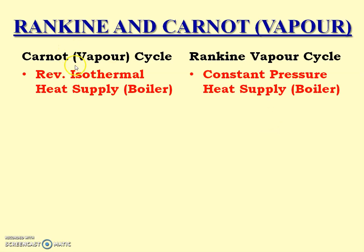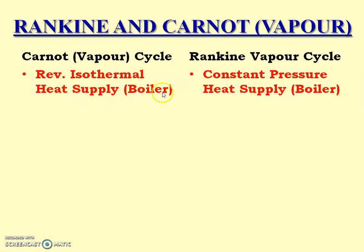What are the working mediums for both these two cycles? Both have the same working medium, that is vapor. The first process in Carnot vapor cycle is reversible isothermal heat supply, which happens in a boiler. While in Rankine vapor cycle, the process is constant pressure heat supply, that also happens in the boiler. So that is the first difference: in Carnot vapor cycle, heat supplied in the boiler is an isothermal process, while here it is a constant pressure process.